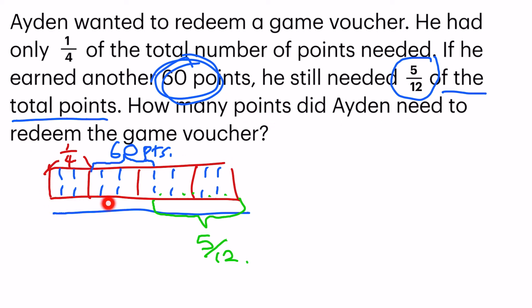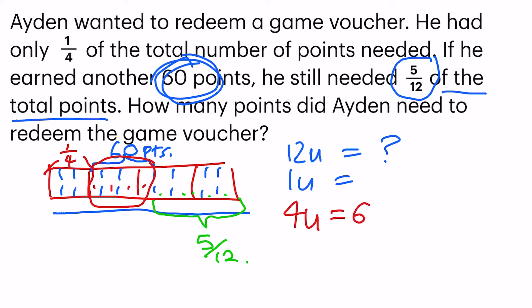That is the entire units — which I'm finding is 12 units. So what is the worth of 1 unit? We shall use this portion to find out. Over here we have 1, 2, 3, 4 units. 4 units is equal to 60 points, so 1 unit is equal to 60 divided by 4, giving me 15.